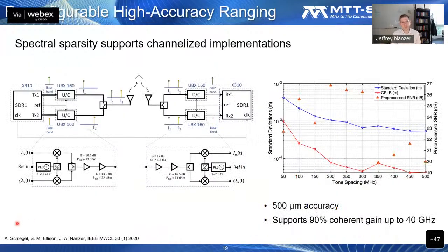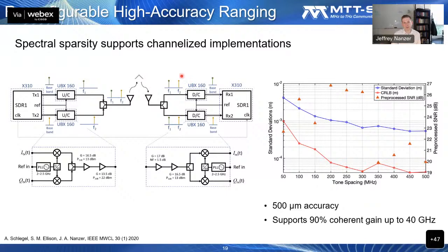When looking at the matched filter output, a linear frequency modulated waveform gives a sinc-type shape with side lobes, while a two-tone waveform has ambiguities. However, in our cooperative system the signal is actively retransmitted from the second node, giving a nice point-source-like response. We just need to disambiguate the correct lobe, and there are straightforward ways to do this by interleaving a narrow pulse between the two tones—this pushes down the ambiguities and lets us localize the correct one. This waveform is not suitable for non-cooperative operations, but works very well for a cooperative system.